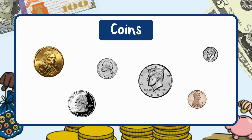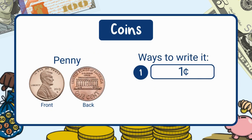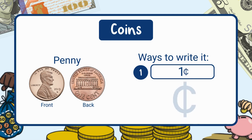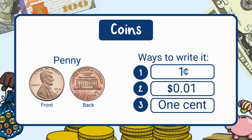Let's meet the coins. This is a penny — it's worth one cent. We can write that in three different ways. First, there's standard form: one cent. This symbol has a C with a line through it, and it stands for cents, which means money less than a dollar. Second, there's decimal form: one cent, using a dollar sign and a decimal point.